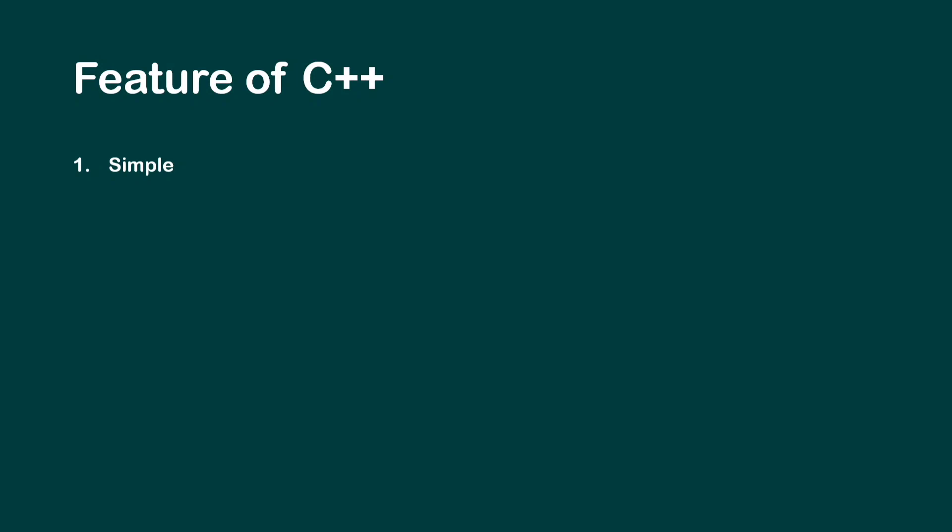Now let's look at features of C++. First, it's simple. C++ has easy syntax that is understandable by anyone in the programming field. It's also written in English, and its keywords belong to the English language, which makes it simple to understand.